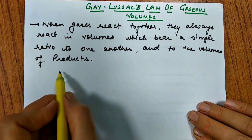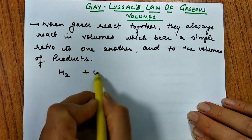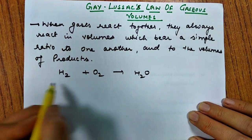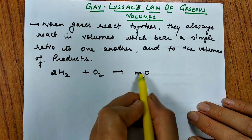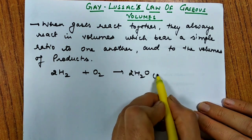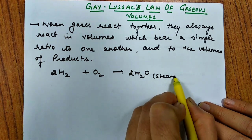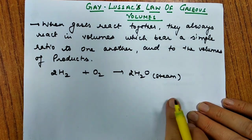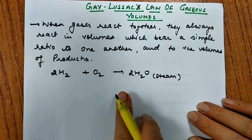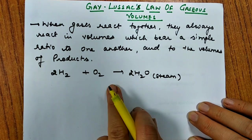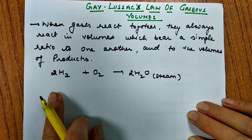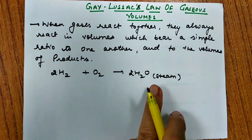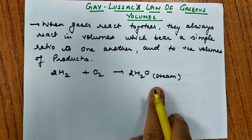So let us take an example. Suppose we have H₂ + O₂ gives us H₂O. Let us balance the equation. This is in gaseous state, this is in gaseous state, and this is also in gaseous state, say in the form of steam. So from this equation, we can say that when hydrogen and oxygen combine, it has been observed that two volumes of hydrogen always combine with one volume of oxygen to produce two volumes of steam.